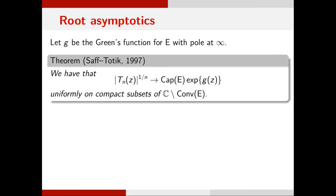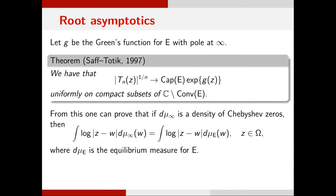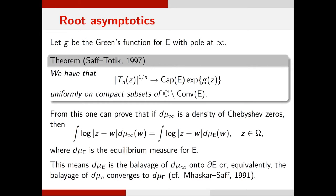We always have root asymptotics, found in Saff and Totik's book on logarithmic potential theory. The Green's function and capacity appear. If you have a density of Chebyshev zeros and look at the corresponding potential, then outside the polynomially convex hull the potential coincides with the potential for the equilibrium measure. This means pushing these limit measures out to the boundary gives equilibrium. This has been known since the early 1990s, found in work of Maskara and others.